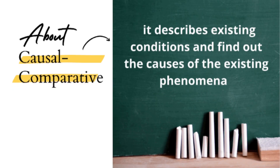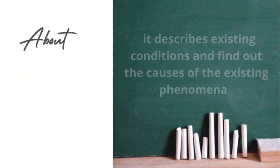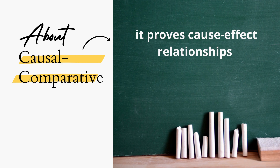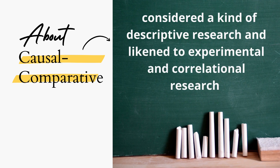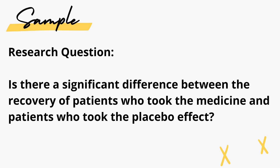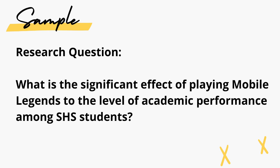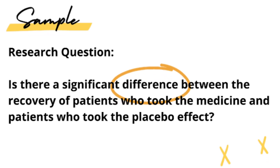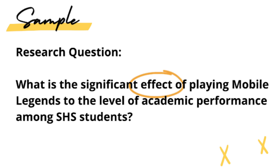The fifth and last type is causal comparative. It describes existing conditions and finds out the causes of existing phenomena. It proves cause-effect relationships and is considered a kind of descriptive research, likened to both experimental and correlational research. A sample research question is: Is there a significant difference between the recovery of patients who took the medicine and patients who took the placebo effect? Another example: What is the significant effect of playing Mobile Legends on the level of academic performance among senior high school students? Take note of the terms 'difference' and 'effect,' as these are the most commonly used in causal comparative study questions.